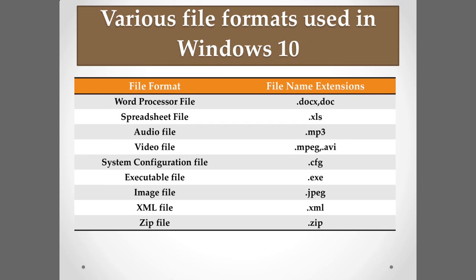There are many file formats used in Windows 10, but the common ones are as follows. Word processor files (MS Word) have the extension .docx or .doc. Spreadsheet files (Excel) use the extension .xls. Audio files use .mp3. Video files such as movies use .mpeg or .avi.